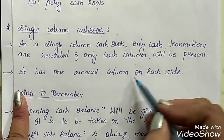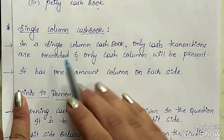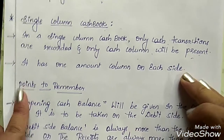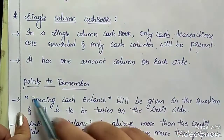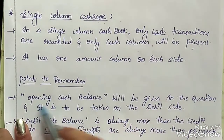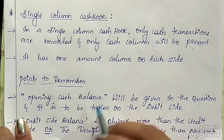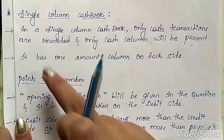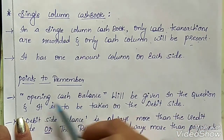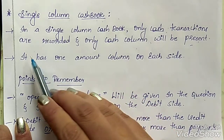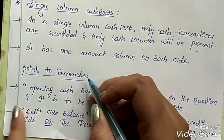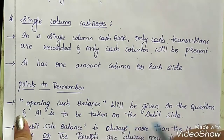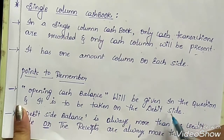It has one amount column on each side — on the debit side as well as on the credit side. Debit side is for receipts and credit side is for payments. Before preparing a single column cash book, remember: the opening cash balance will be given in the question and it is to be taken on the debit side, which is the receipts side. The first entry should always be the opening cash balance. It may be given as 'started business with cash' or as the cash balance from the previous month.